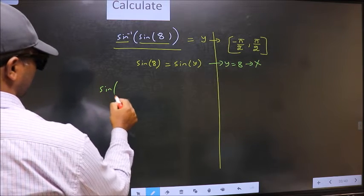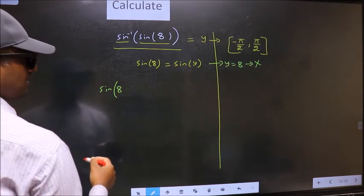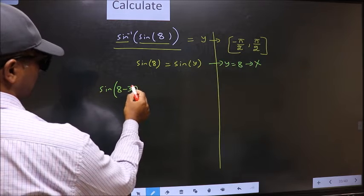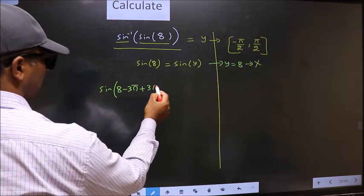Sin 8 exceeds that interval. So we should decrease it. And to decrease I subtract 3 pi. Now whatever we are subtracting we should also add the same thing.